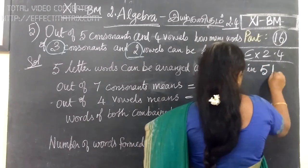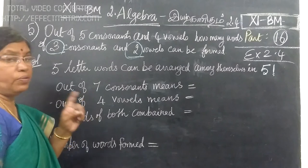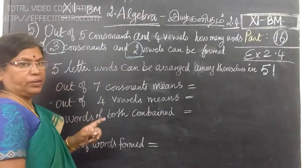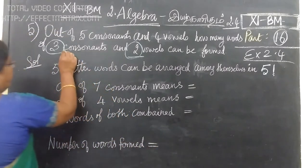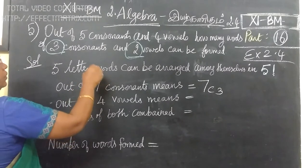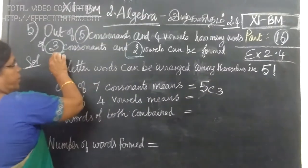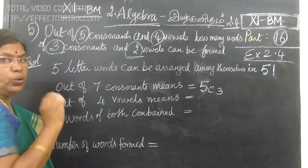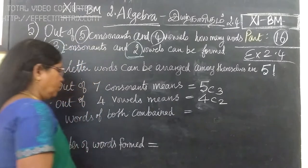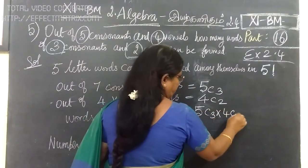So, first part is over. The five-letter word is formed. Out of seven — out of four vowels, we are taking two. This is the beginning: four, three, two. So, compared to three consonants, we can form it in four, three, two ways.